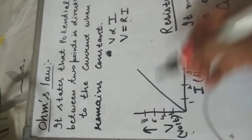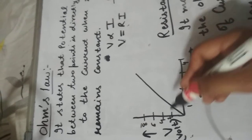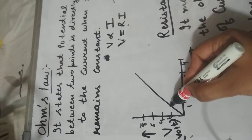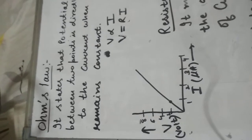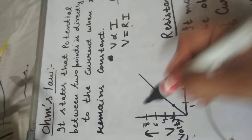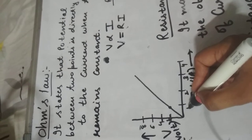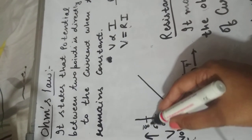अगर current की value है 1 ampere, और potential difference की value है 2 volt. तो 2 volt पे current की value 1 ampere आई. फिर हमने potential difference को 2 volt से 4 volt कर दिया, तो current भी 1 ampere से 2 ampere हो जाएगा. तो point will come here. अगर हम potential difference की value 4 से 6 कर देते हैं, तो current की value भी 2 से 3 आजाएगी.